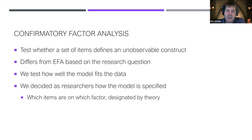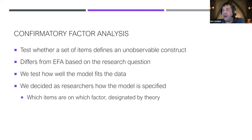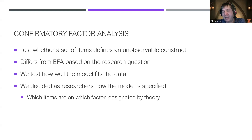This is all really theory-derived — what items go on what factors should be determined by theory. We're testing a theoretical model here. We can also have misspecifications: it could be we're missing important variables, or there could be some bad items. Every model is going to have some degree of misspecification — we just want to minimize that as much as possible.